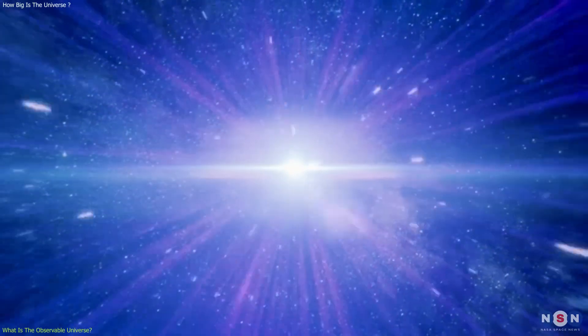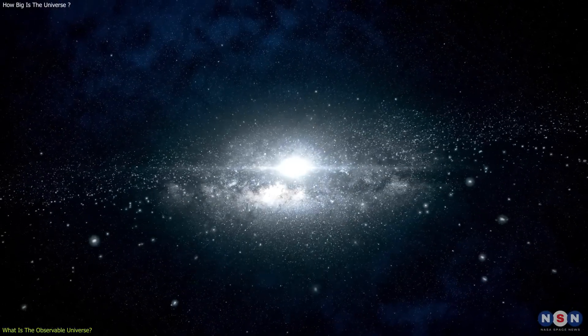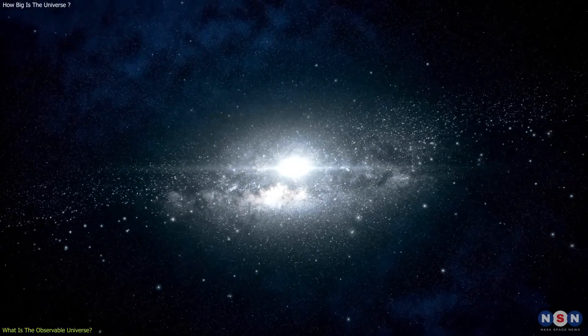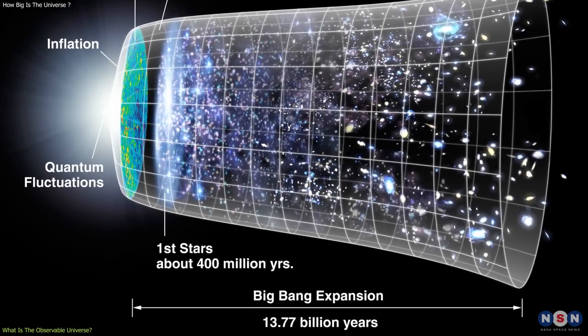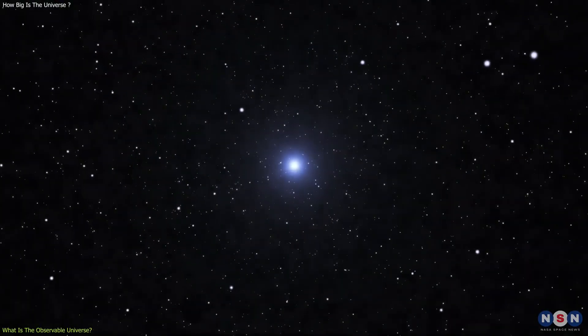Well, the answer is that it would be about 46 billion light years away, and the light would be about 13.8 billion years old. That's because the universe is about 13.8 billion years old, and that's the oldest light that we can see.